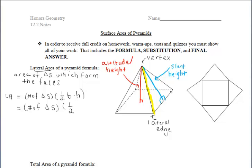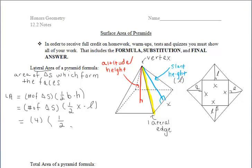I'll call one side of the base X and the slant height L. The area of one triangle is one half of base X times slant height L, multiplied by however many triangles we have. In the diagram on the right, I've taken the pyramid and split it at the vertex so all lateral faces lie flat. Since it's a regular square pyramid, all four sides are X and all heights are L, giving us four congruent triangles.